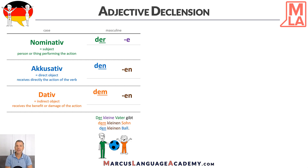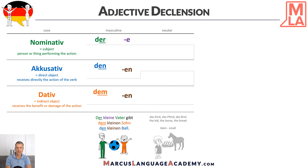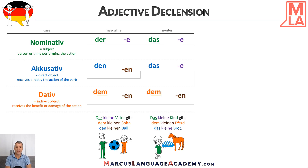Now let's see what happens when we have neuter nouns like das Kind, das Pferd, das Brot. The sentence here would be: das kleine Kind gibt dem kleinen Pferd das kleine Brot.